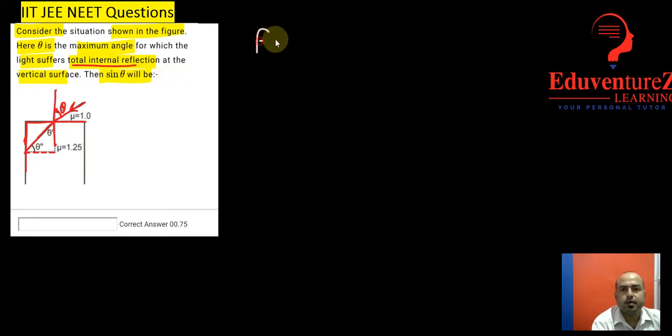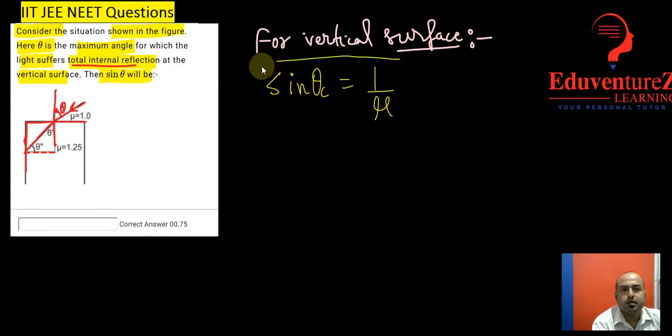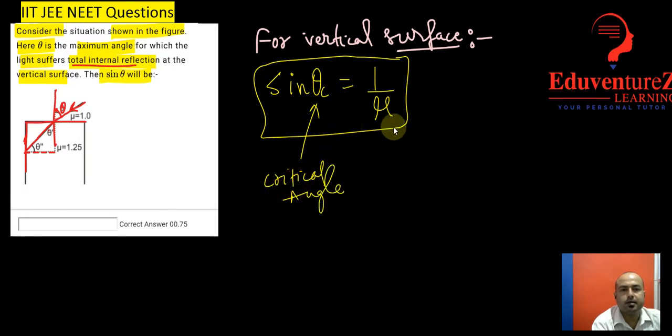That means for the vertical surface, we can apply the formula for condition for total internal reflection and we know the formula for that which is sine theta c is equals to 1 upon mu. This is the formula where theta c is the critical angle and mu is the refractive index. Here sine theta c is sine theta double dash, so it will be written as sine theta double dash equals to 1 upon mu. Mu is given as 1.25.